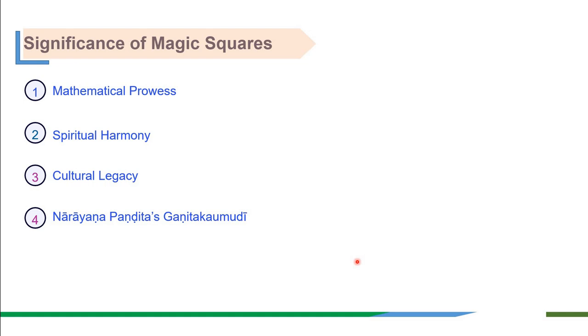Narayan Pandita's Ganit Kamudhi gives us three reasons for the use of magic squares. One is in order to embellish the practice of good mathematics. This means that magic squares were not just mathematical puzzles but also seen as a way of beautifying mathematical practices.